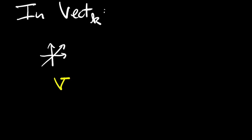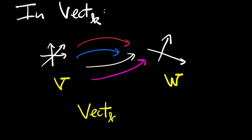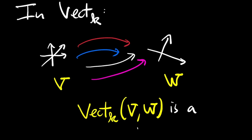For a little bit of context, consider the category of vector spaces over a fixed field k. The set of linear maps from a vector space v to a vector space w isn't just a set — it has additional structure. You can add linear maps and multiply them by scalars, and it turns out that the set of linear maps from v to w is actually a vector space. We'd like to do something similar in the category of topological spaces.